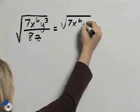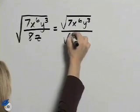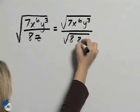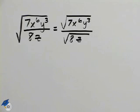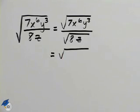So we'll have the square root of 7x to the sixth y cubed over the square root of 8z. I will now simplify each of these radicals by rewriting each in terms of their perfect squares and non-perfect squares.